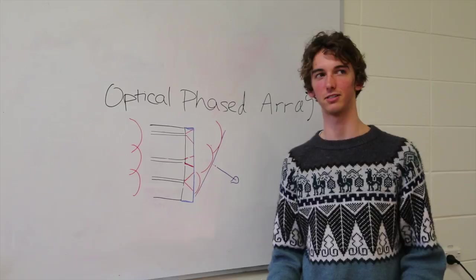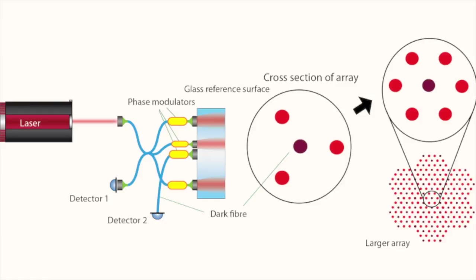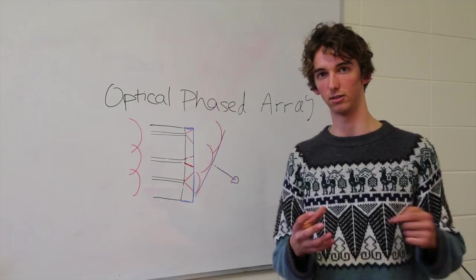An optical phased array is a device that allows us to control the effective wavefront of light. It does this by passing different bits of the light through special crystals called phase modulators. Phase modulators allow us to control the speed of the light passing through them.